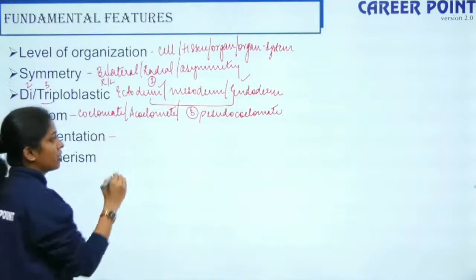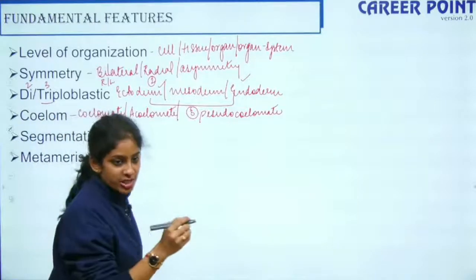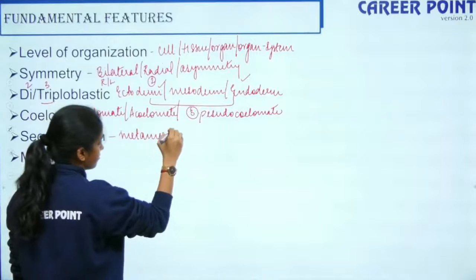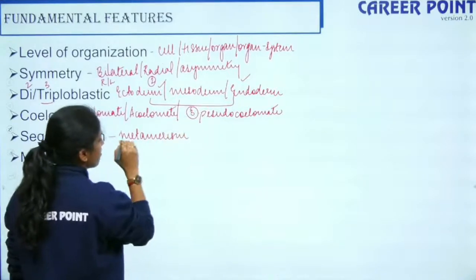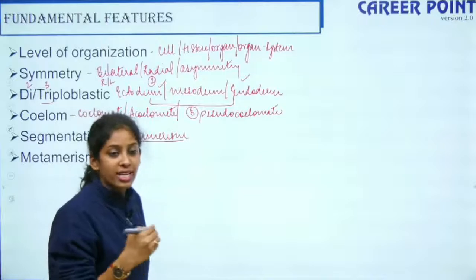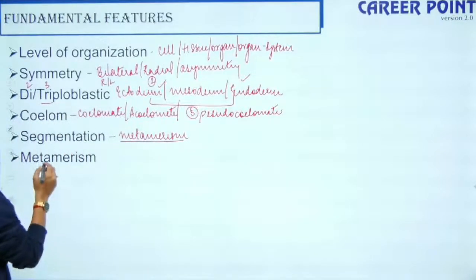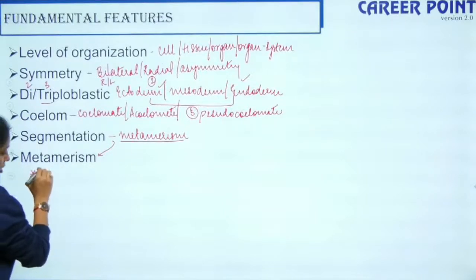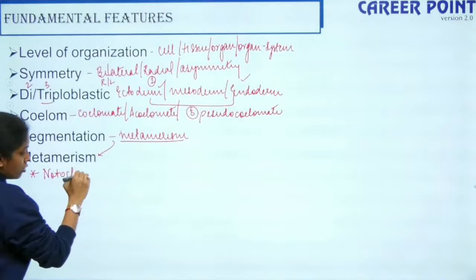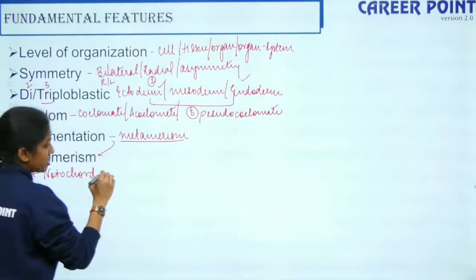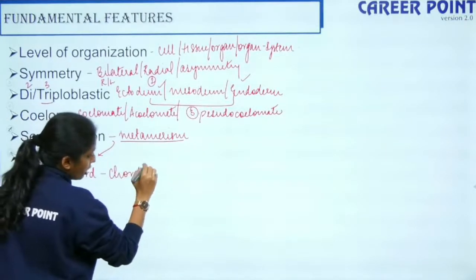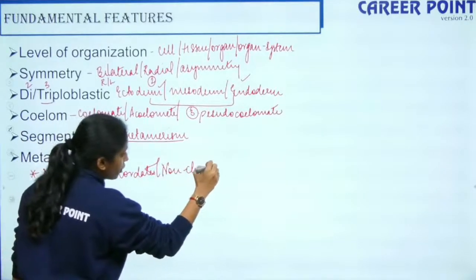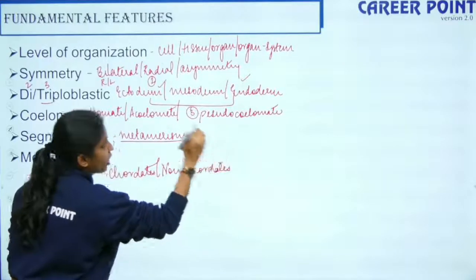The fifth point is segmentation — whether the body is divided into segments. Along with segmentation it can also have metamerism, which is the repetition of organs. The sixth and last point is the notochord. The notochord is only present in chordates, so based on its presence an organism can be differentiated into chordate or non-chordate.